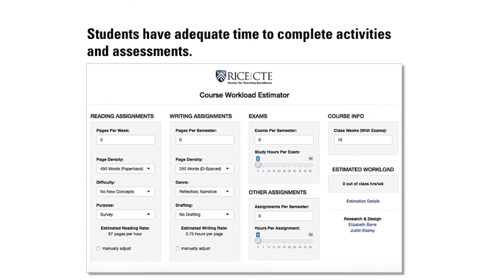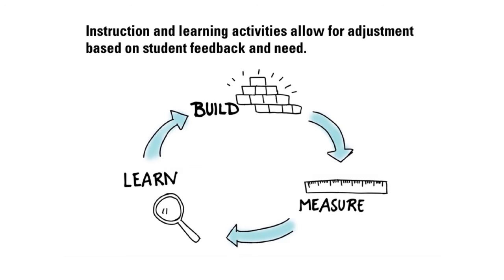The fourth framing element is making sure that the instruction and learning activities allow for adjustment based on student feedback. We really support faculty doing a plus-delta midterm reflection from students to get feedback on what's working well and what's not. You can make changes in the middle of the course, which makes it better for those students — if you wait until the end-of-course evaluation, at that point it's too late for them. Build your assessment or activity, measure how well the students do on it, get some feedback, learn from that, and come back to build it again. It really becomes this continuous and iterative cycle.